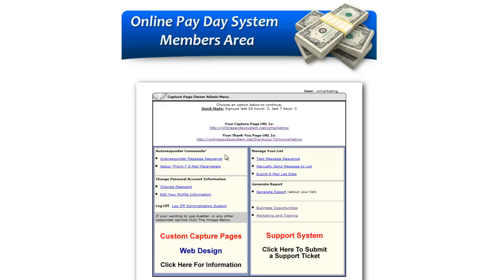Over here on the left-hand side you will see your autoresponder message sequence, which doesn't actually need to be changed unless you want to edit those messages. It does pull your personal information from your profile so that your customers or prospects who opt-in will automatically receive emails that appear to come personally from you.